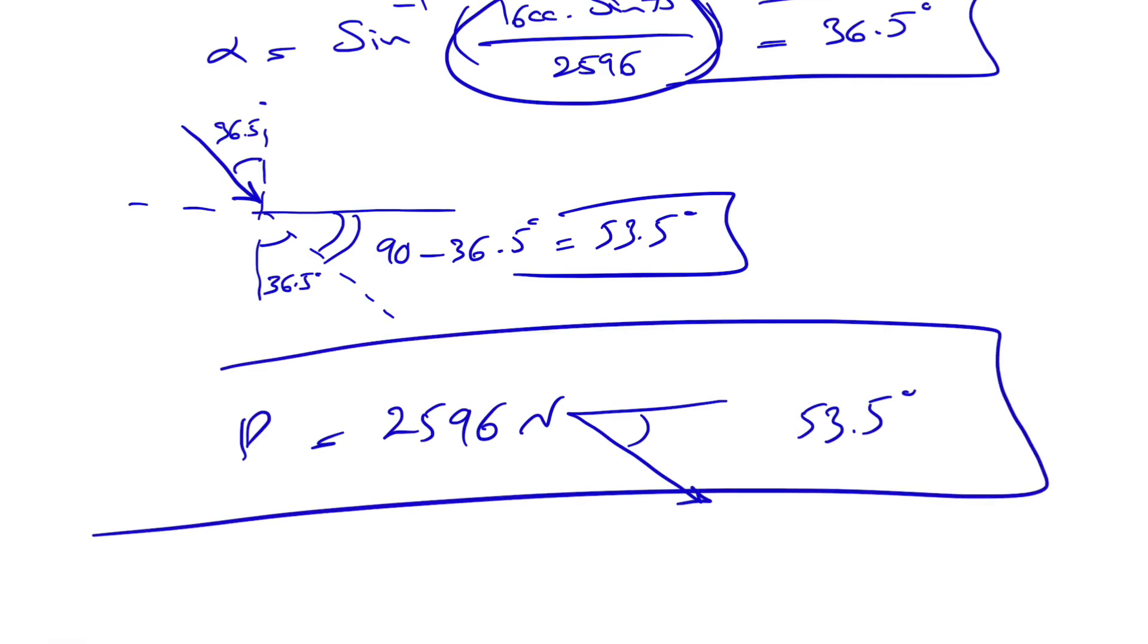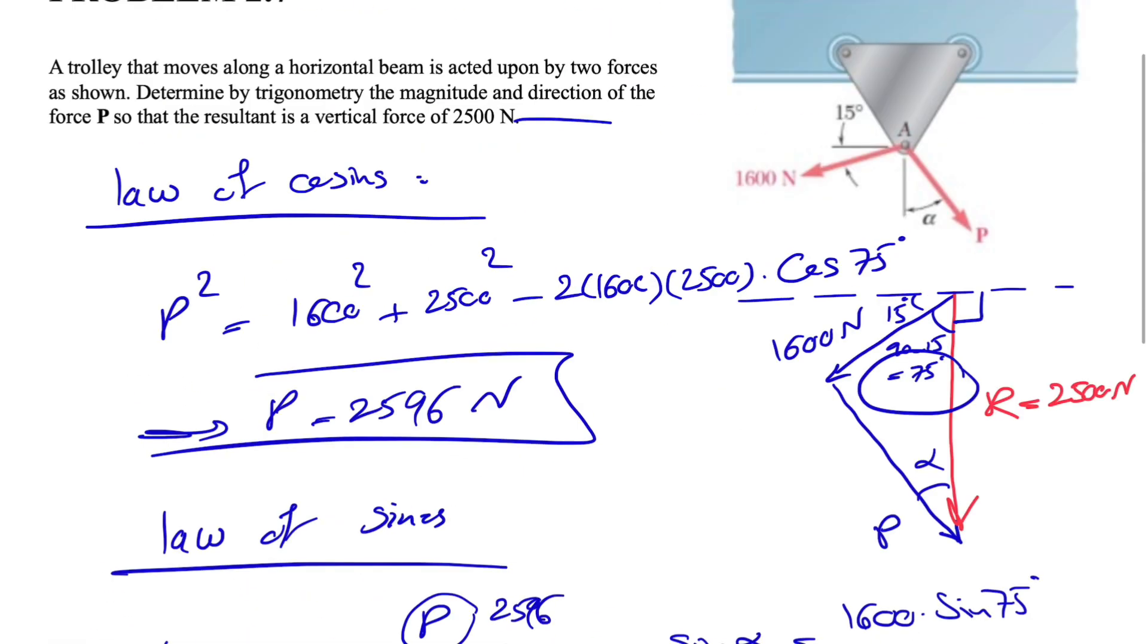So we had to start with the law of cosines in order to find the magnitude of P. We couldn't start directly with the law of sines because we are missing an angle and we are also missing the magnitude of force P. So we had to use the law of cosines at the beginning.